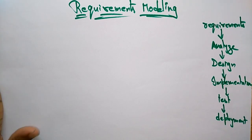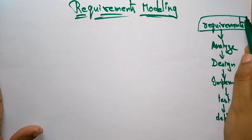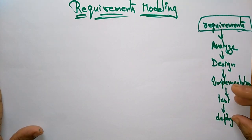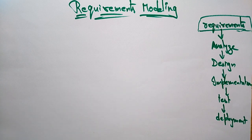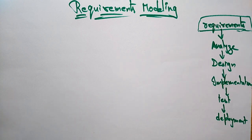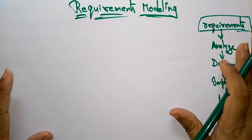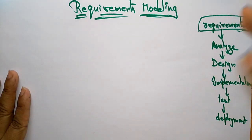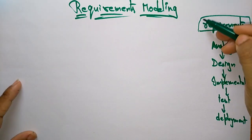Now let us see the first stage: requirement modeling. Whatever stage we are doing, everything first needs to be represented in a diagrammatic form. In the design phase, the methods and functions — the internal structure — are designed. In the analysis phase, the complete details about the requirements are designed. The static and dynamic models used in the product also have to be designed. Every stage has to be designed.